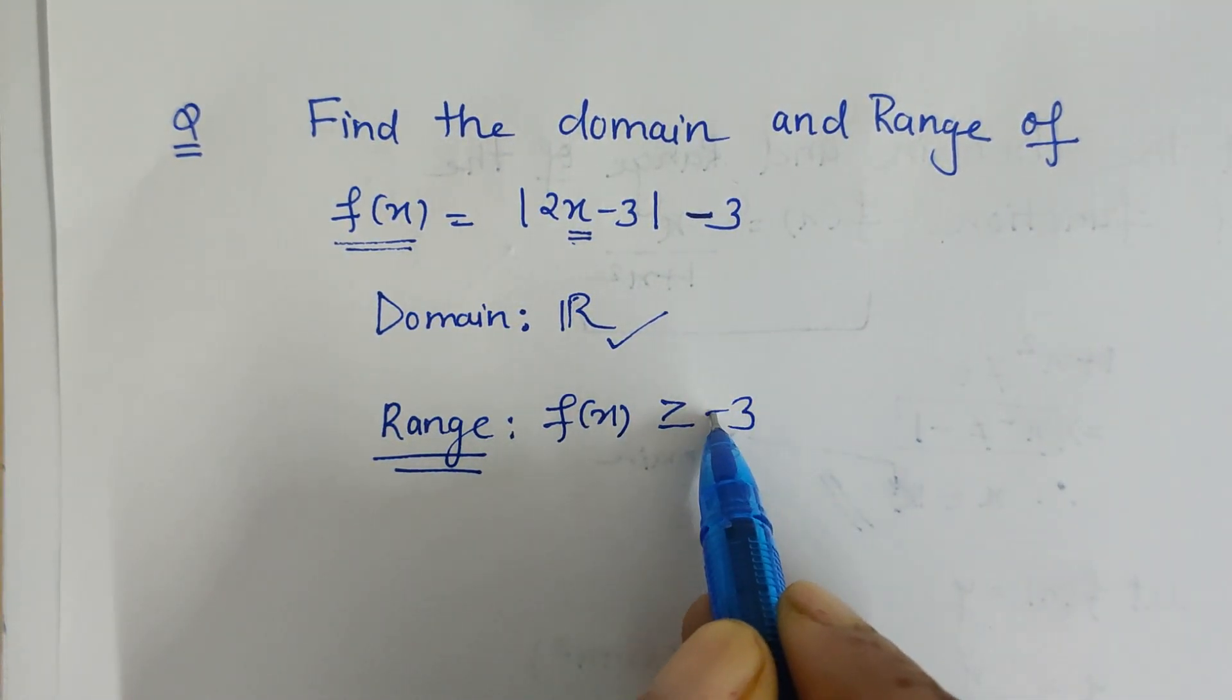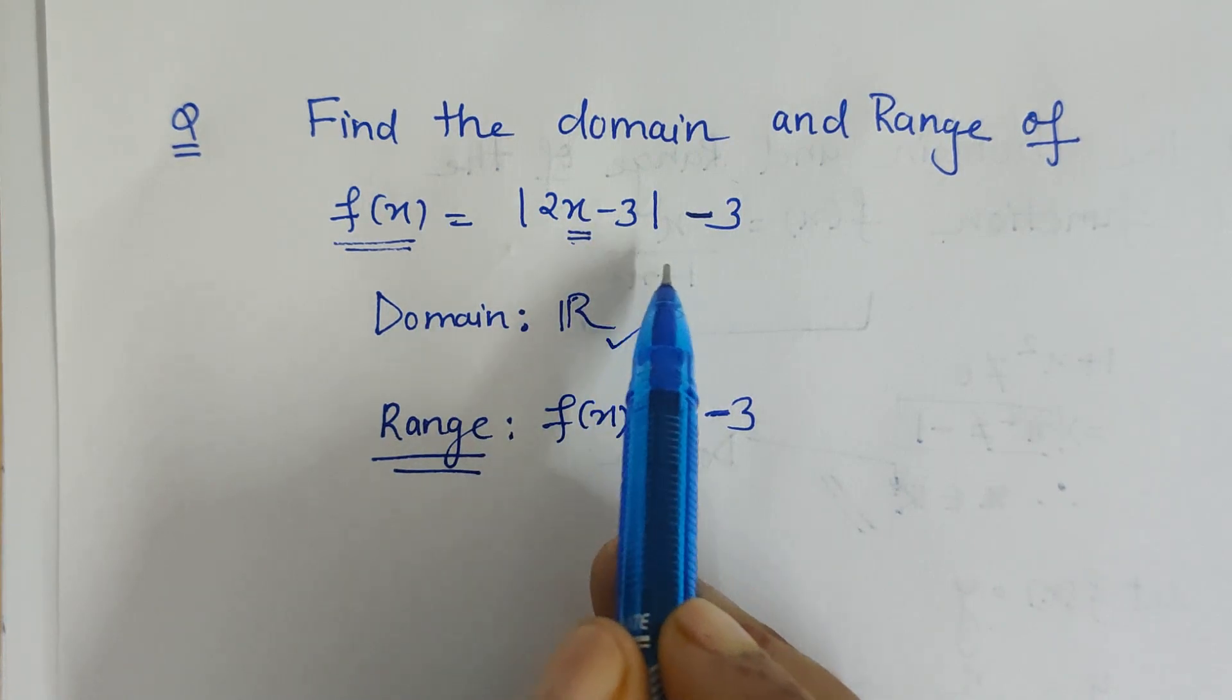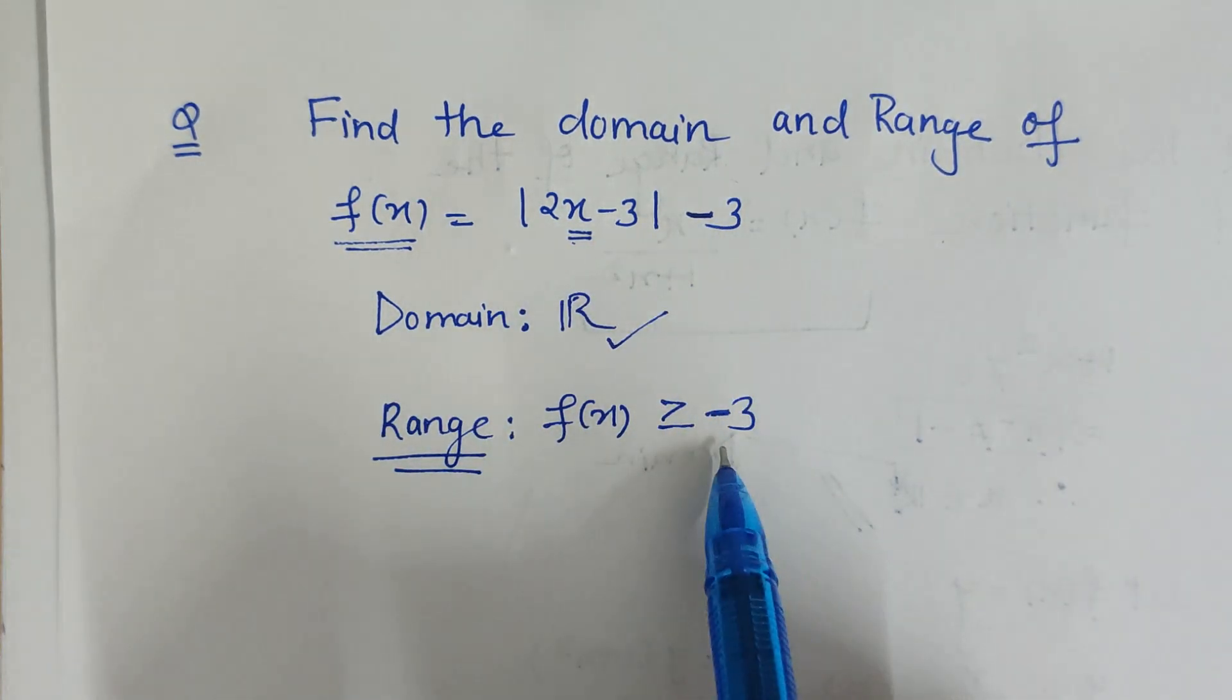How? If I put x equal to suppose 3/2, 2 and 2 gets cancelled, 3 - 3 - 3 is 0 and the result is -3. So I will get -3.